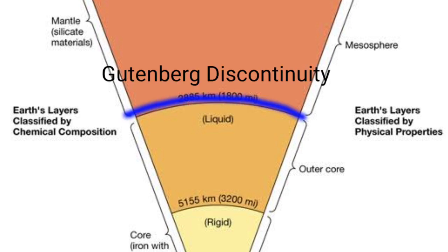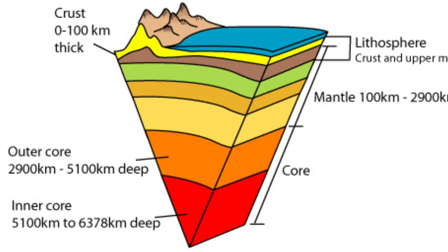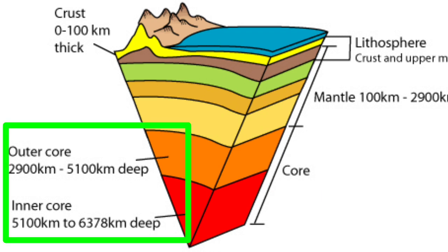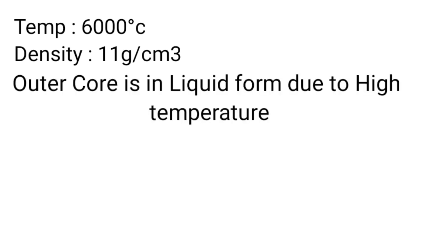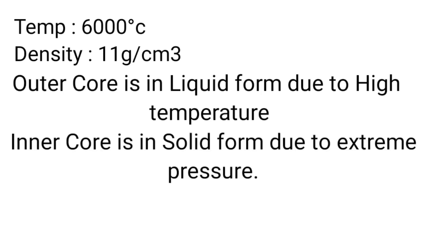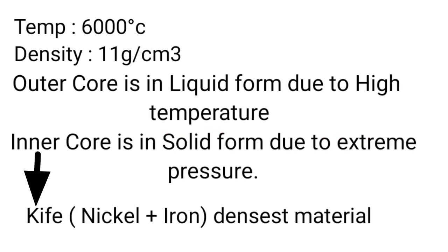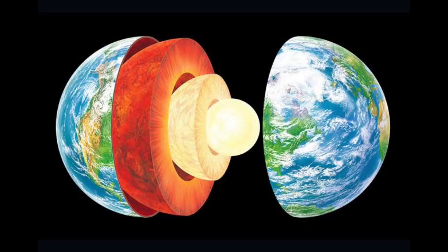The core and the mantle are divided by a thin layer known as the Gutenberg discontinuity. The core is the most inaccessible and deepest zone of the Earth, divided into outer core and inner core. The outer core extends from 2900 kilometers to 5100 kilometers deep; the inner core extends from 5100 kilometers to 6378 kilometers, which is the center of the Earth. The temperature is 6000 degrees Celsius and density is 11 grams per centimeter cube. Due to high temperature, the outer core is liquid; despite high temperature, the inner core is solid due to extreme pressure from the overlying layers. The inner core is also known as NiFe, made up of nickel and iron, the densest metals found.